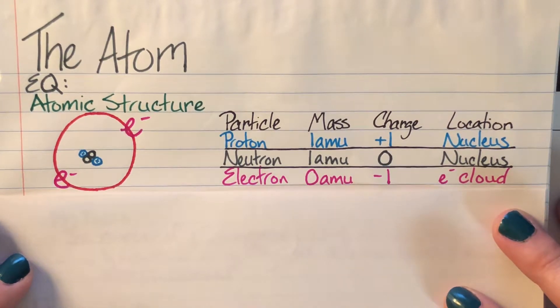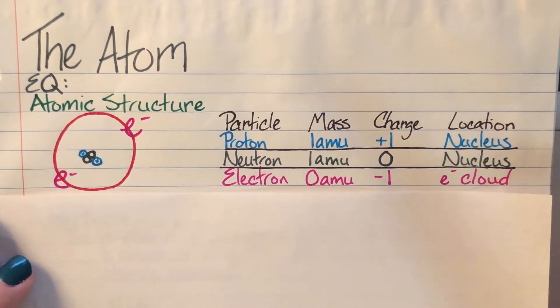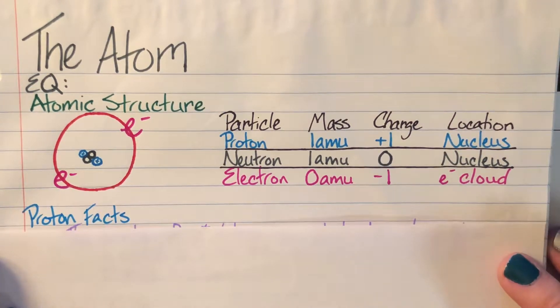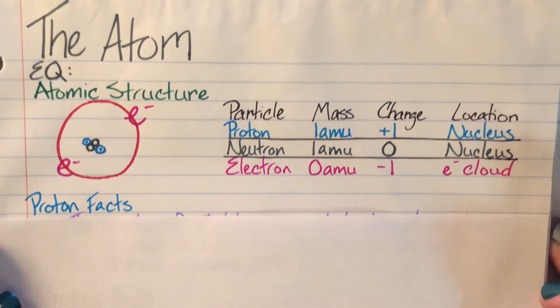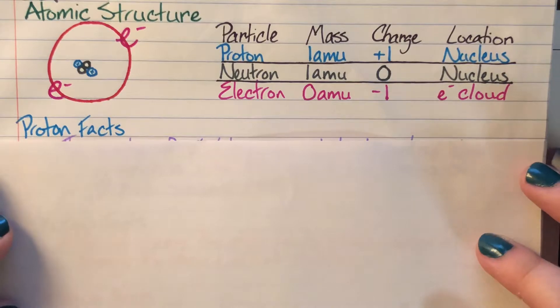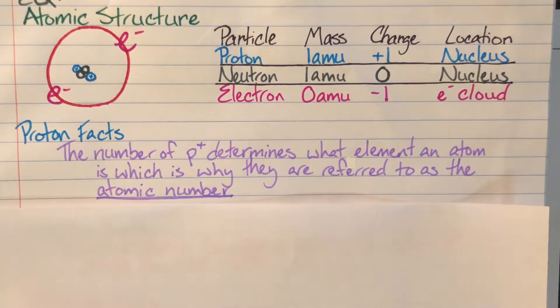So I do have some important facts that we need to discuss, some misconceptions that people have about these individual subatomic particles. And so we are going to first talk about our protons. So some proton facts that we have for you is that the number of protons determines what element an atom actually is. And since they are so fundamental to who the atom is, we call them the atomic number.